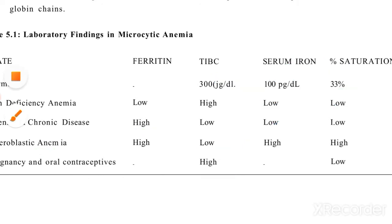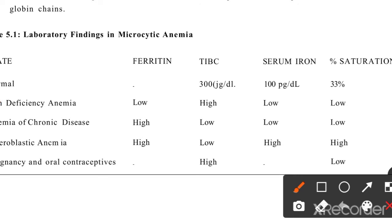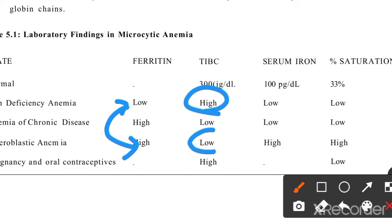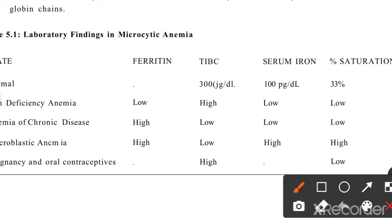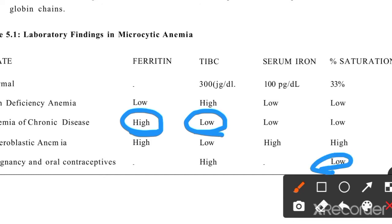This is totally opposite to iron deficiency anemia where iron is low, ferritin is low, TIBC is high. In chronic disease anemia, ferritin is high but TIBC is low — similar to sideroblastic in some parameters. In iron deficiency, percentage saturation is low, ferritin is low, and TIBC is high. Pregnancy and oral contraceptives also affect these values similarly to iron deficiency anemia.